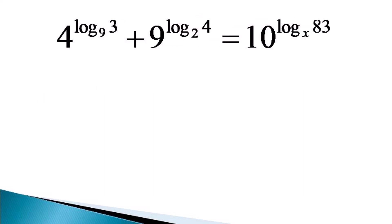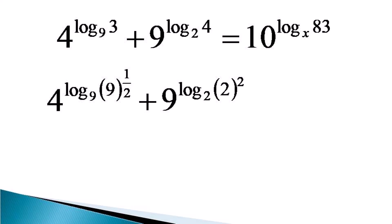To solve this equation, first we express the first term on the left hand side as 4 raised to the power log of 9 raised to the power half to the base 9. For the second term, 4 is expressed as 2 squared, and the second term becomes 9 raised to the power log 2 squared to the base 2, which is equal to 10 raised to the power log 83 to the base x.